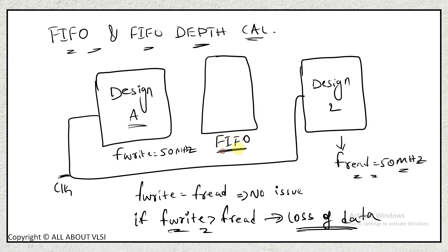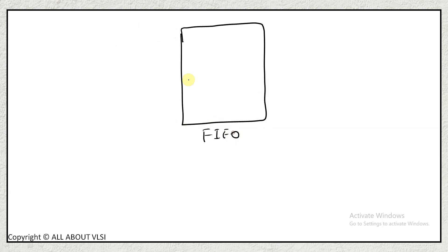FIFO stands for First In First Out. It is a module used for temporarily storing data and pushing it to Design 2. Design A writes data at higher speed, and when there is a chance of data loss, the FIFO holds the data temporarily and sends it to Design B — acting like a buffer. For designing this FIFO, we need to decide how many data items it should store, which is the depth. FIFO has two parameters: depth and width.